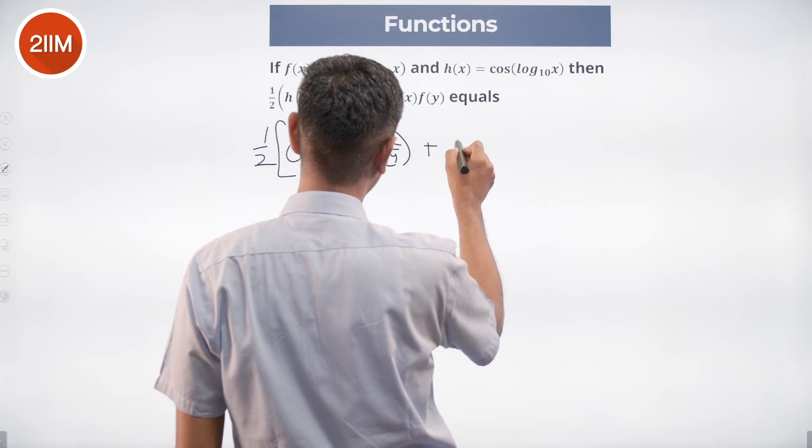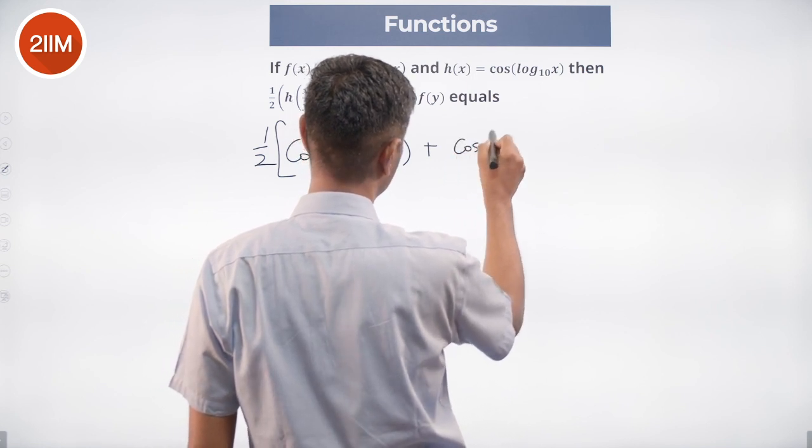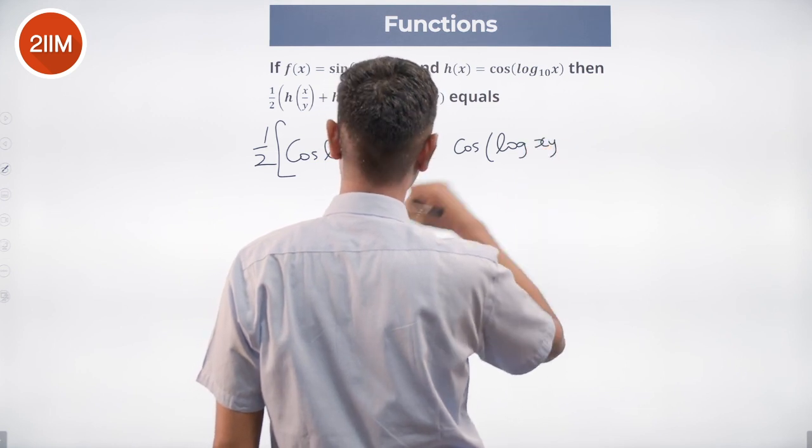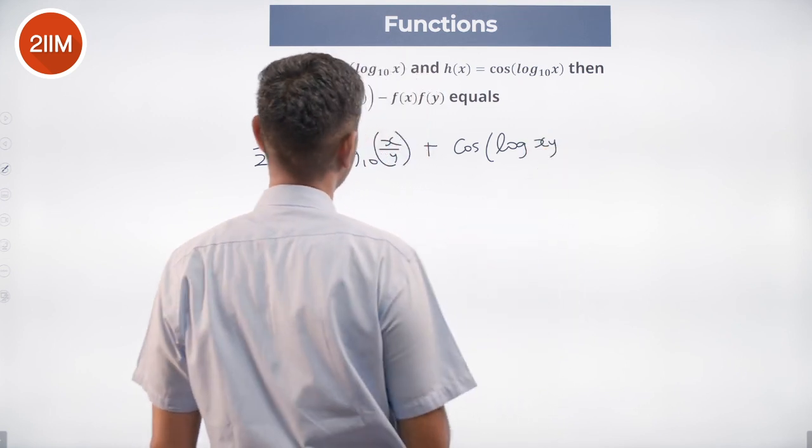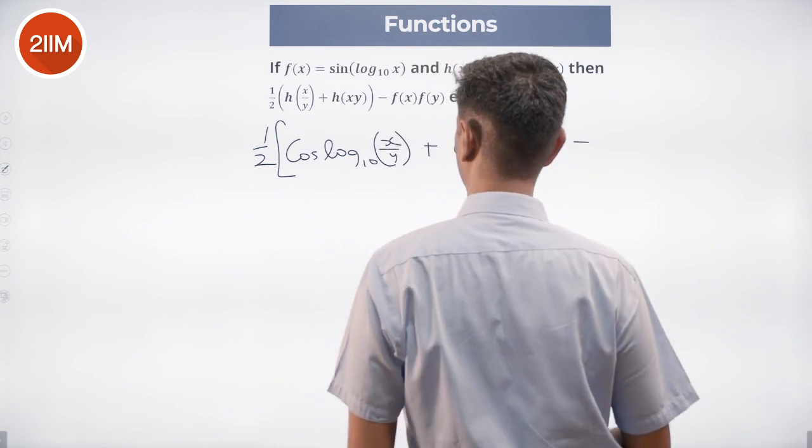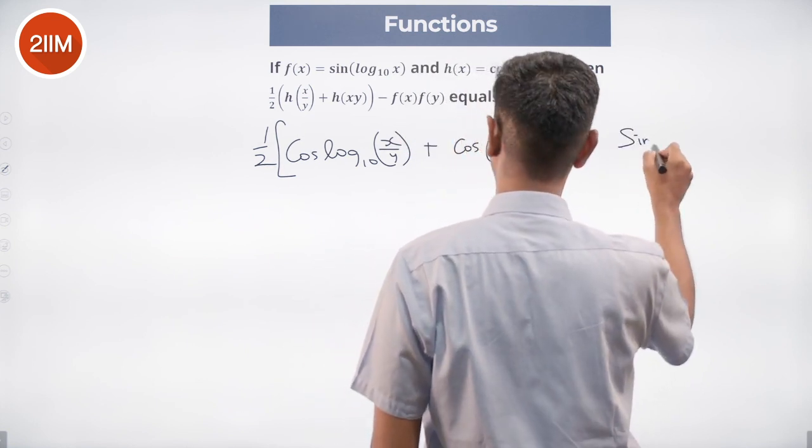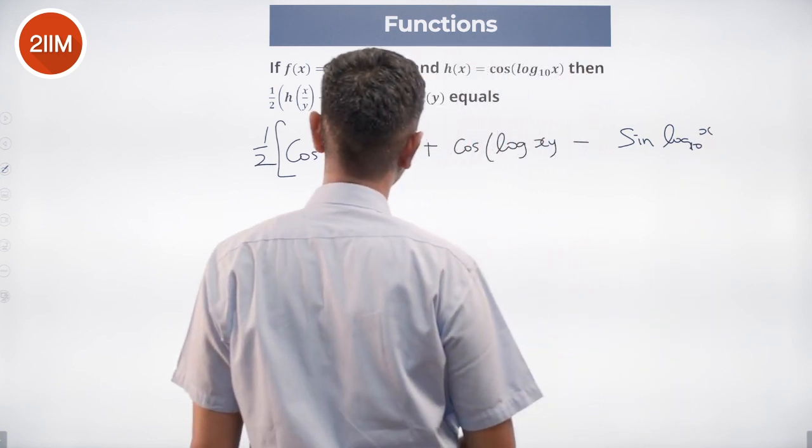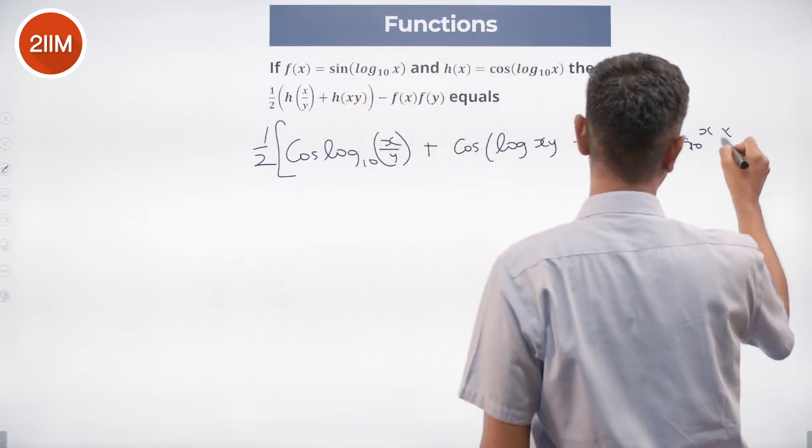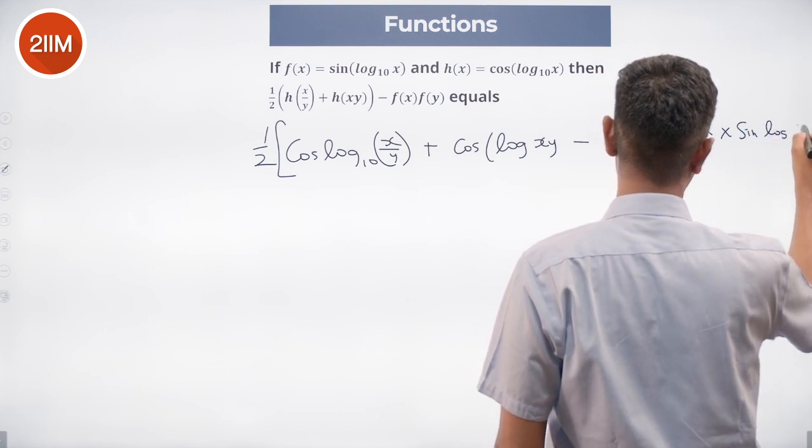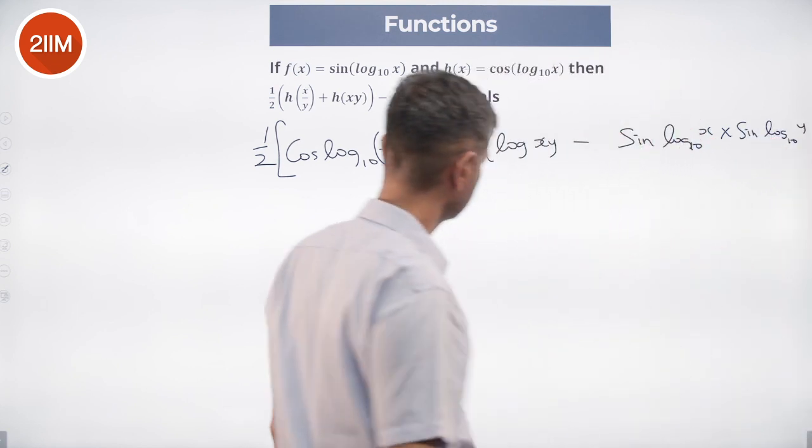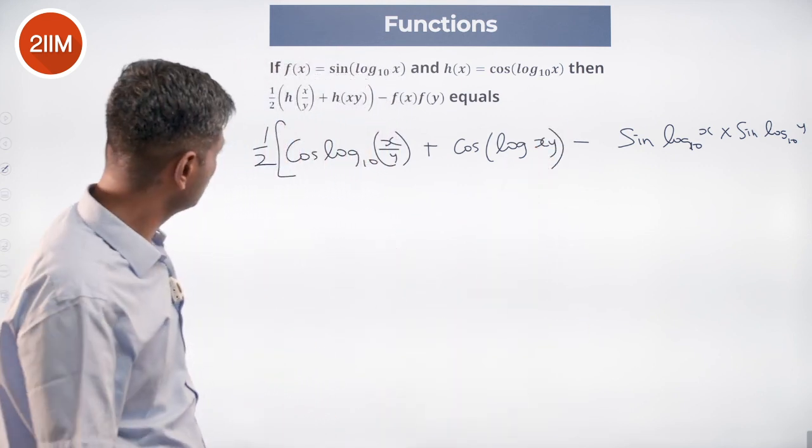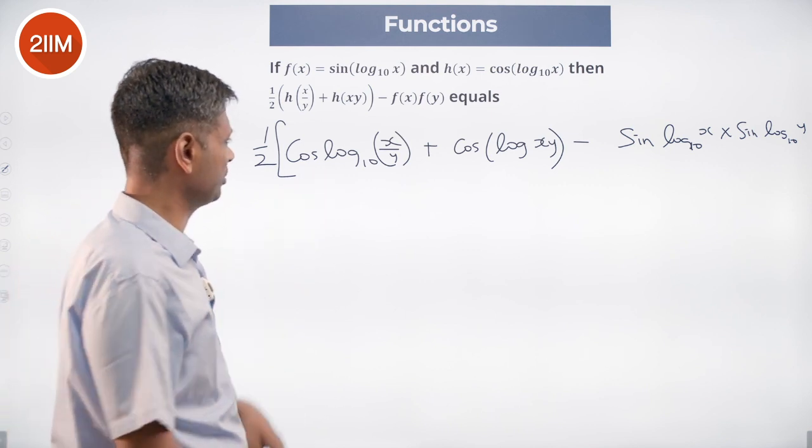Plus h(xy): cos(log xy), minus f(x) into f(y): sin(log x) to the base 10 into sin of log y to the base 10.